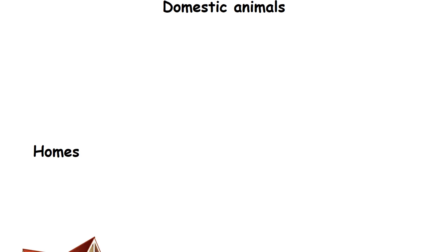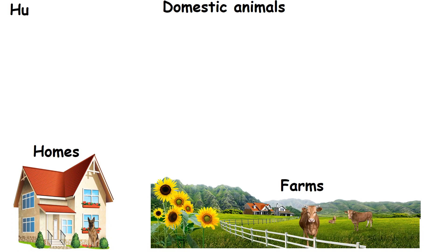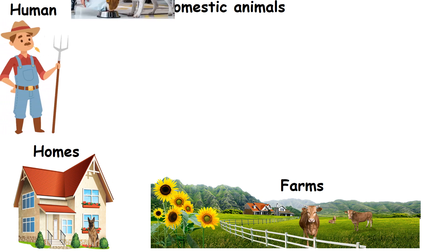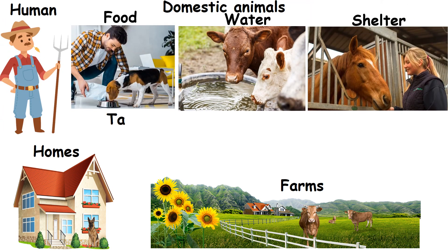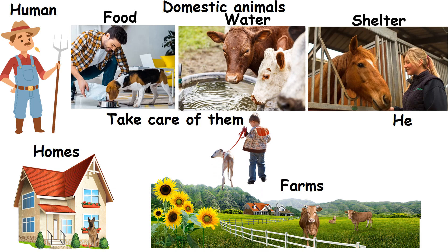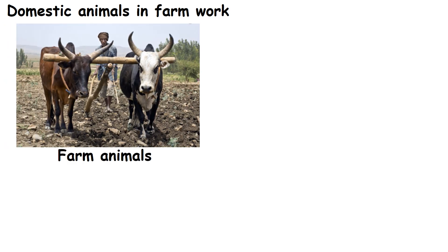Domestic animals are found in and around our homes and farms. They depend on humans for their food, water and shelter. We take care of them and they help us in several ways. Some domestic animals help us in our farm work. They are called farm animals.